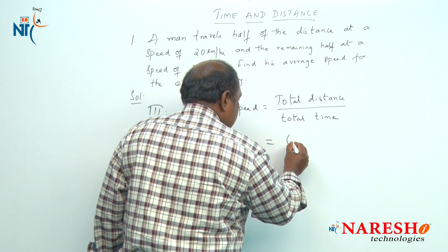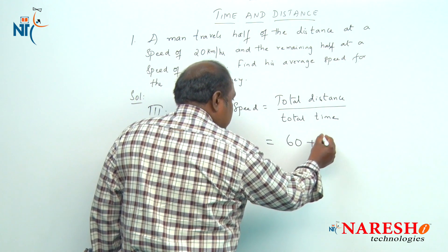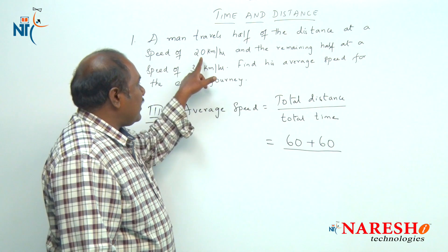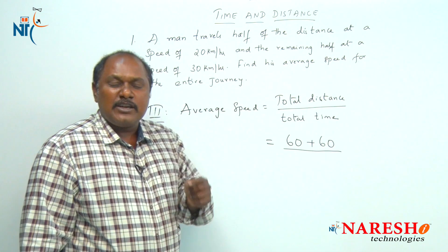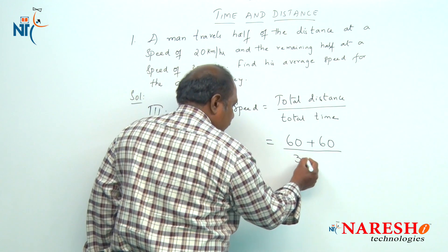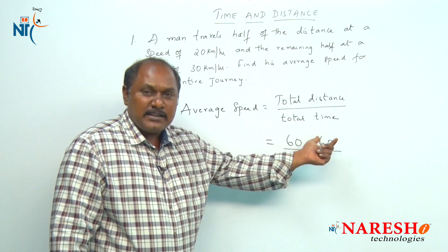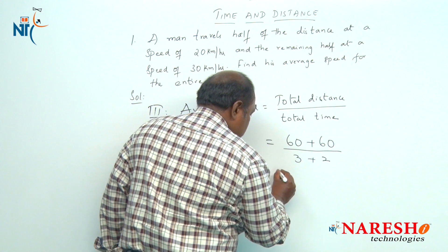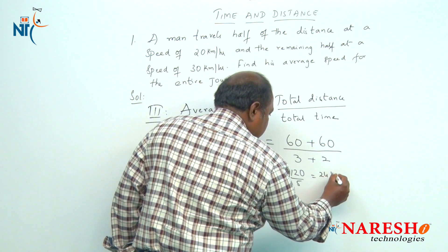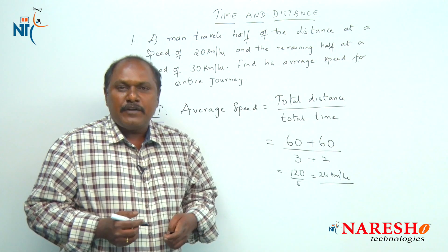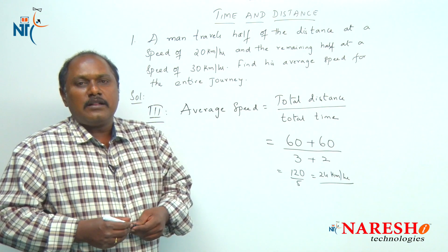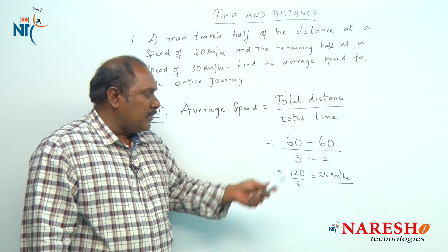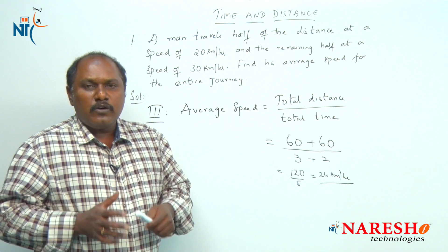Assume 60 as the first half of the distance, so the second half is also 60 km. Time for the first half is 60 divided by 20, which is 3 hours. Time for the second half is 60 divided by 30, which is 2 hours. Total distance is 120 km, total time is 5 hours, giving an average speed of 24 km per hour. We can clearly see that if we know how to find the LCM quickly, this third method is the best and easiest approach.